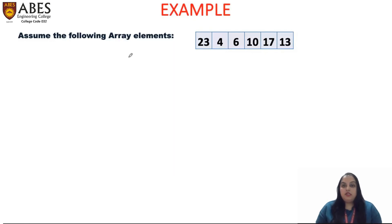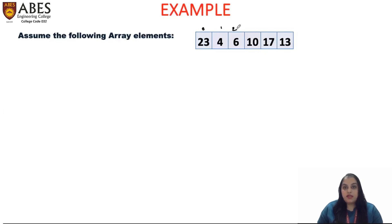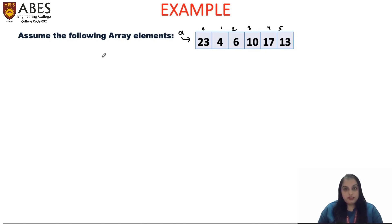Let us take an example. We have taken 6 elements at different locations starting from index 0 to 5. So 6 elements are there in the array, suppose A. This array A contains these elements. Suppose the element that I want to find, or the key element that I want to search, is equal to 17.